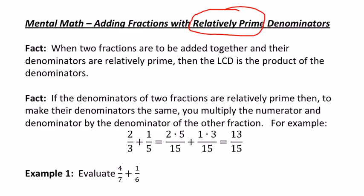So a couple facts that you need to make sure you're clear on. When two fractions are added together and their denominators are relatively prime, have no common factors, then the least common denominator is just the product of the denominators. Just multiply the denominators together, that's your least common denominator.